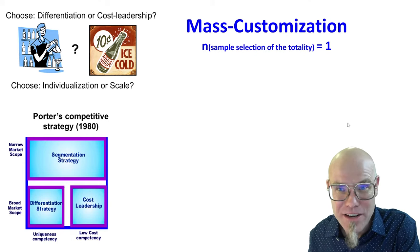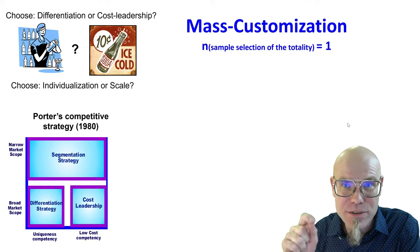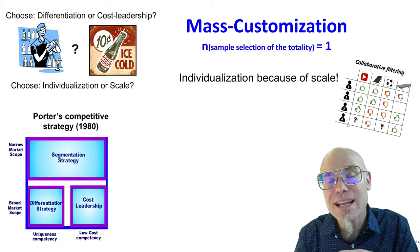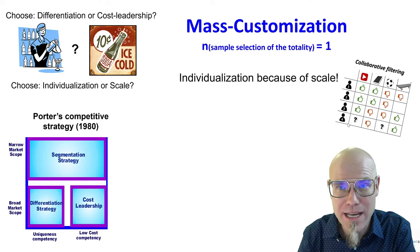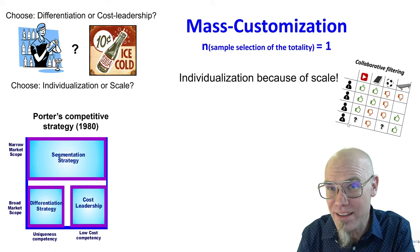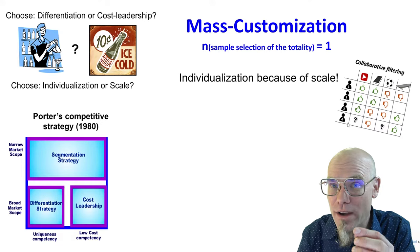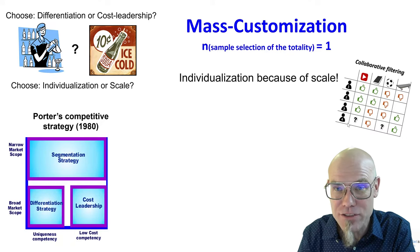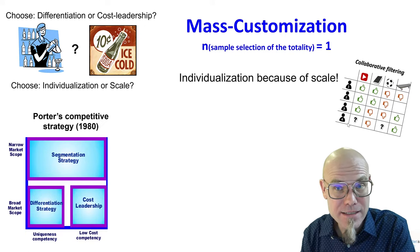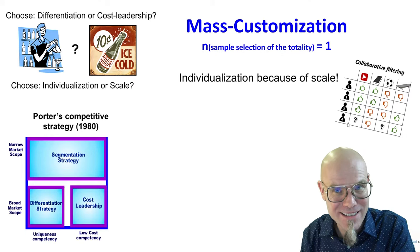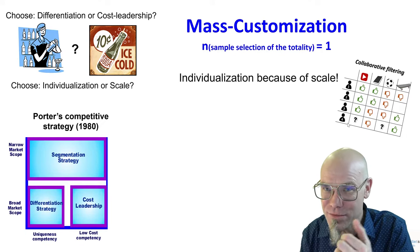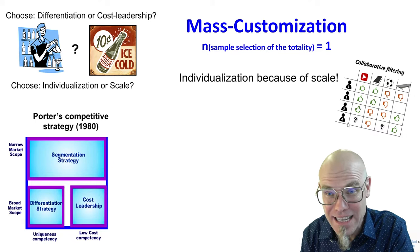Now, the interesting thing with the digital paradigm is that data combined with machine learning allows us to have individualization and customization because of scale. I link here to my previous lecture on recommender algorithms and collaborative filtering. The more people I have, the more I can identify how an individual behaves — even if I've never seen that individual — by making predictions derived from many other individuals. The more people in my database, the better I can predict even yet unseen cases.